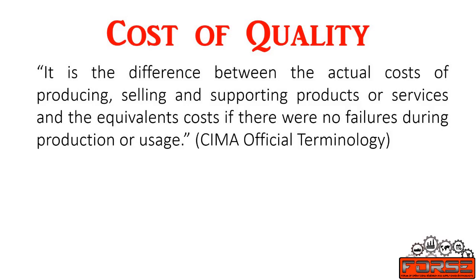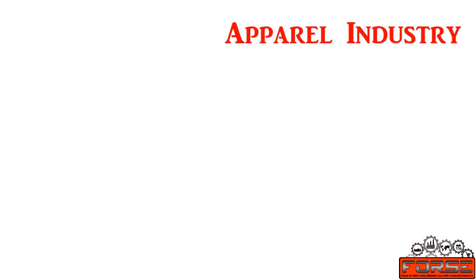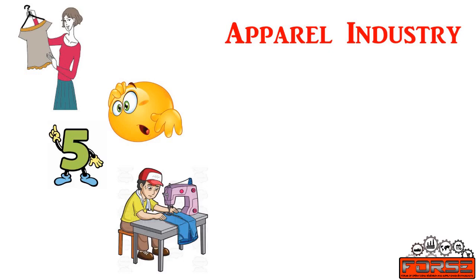In other words, these are the out-of-pocket costs associated with controlling quality and the activities required to correct failure to control quality. To better help understand these concepts, let us take an example of the apparel industry. Typically, the cost to eliminate failure in the customer phase is 5 times greater than it is at the merchandise development or manufacturing phase. Every time work is redone, the cost of quality increases.